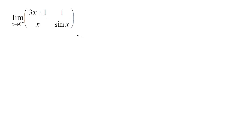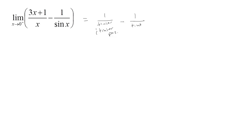Here's another example of an indeterminate form. We have x tending to 0 from above. If x tends to 0 from above, the first term — 3 times a very tiny number — would be very tiny, plus 1 would get closer and closer to 1. And the bottom, we have tinier and tinier positives. The sine of x and x are about the same thing, so as x tends to 0 from above, we have 1 divided by tinier and tinier positives.